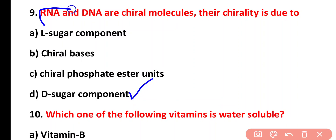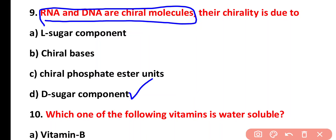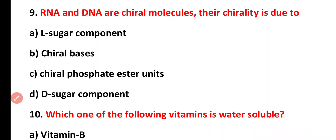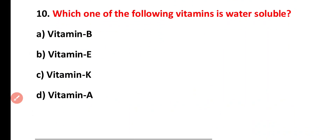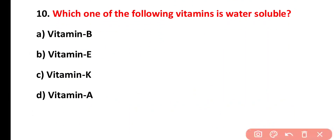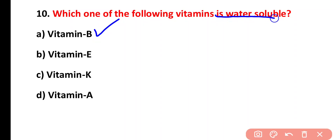Question ten: which of the following vitamins is water-soluble? Options: vitamin B, vitamin E, vitamin K, vitamin A. The correct answer is option A. Vitamin B and C are water-soluble vitamins.